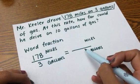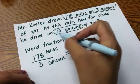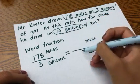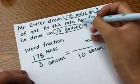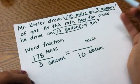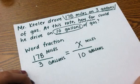Now, on the other side, my problem tells me another fact. It tells me 10 gallons of gas. That means my 10 is going to go on the bottom with gallons. The question is asking me, how far could he drive? That means my unknown is the number of miles.